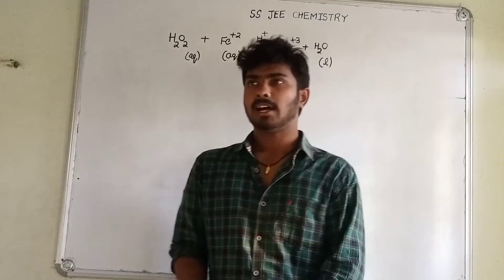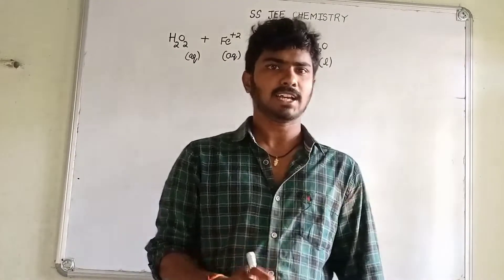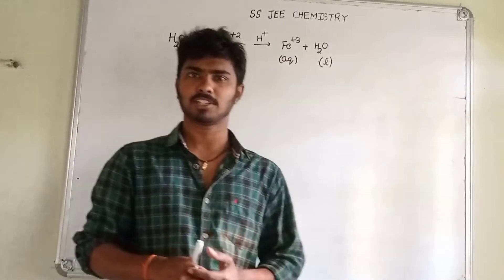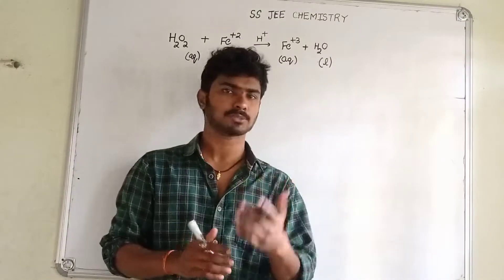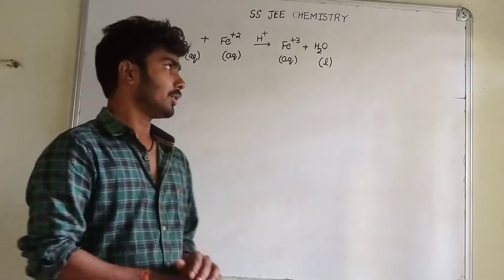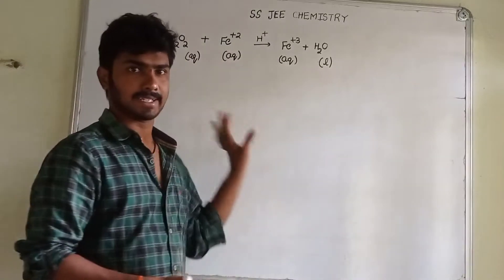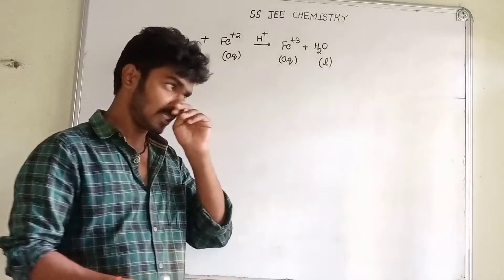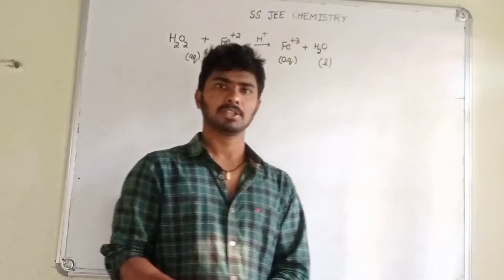We have 4 equations. We don't have a trick or a box. Now, the second box is the second equation. We also must manage the 2 equations.